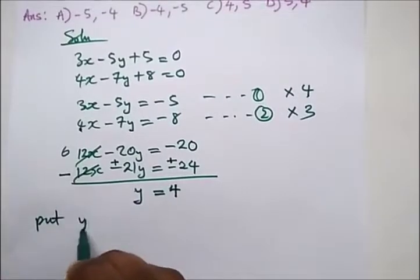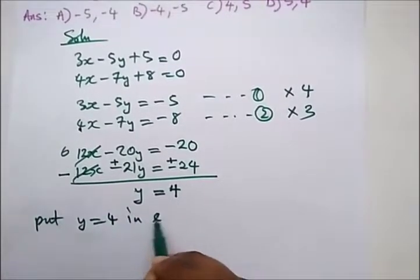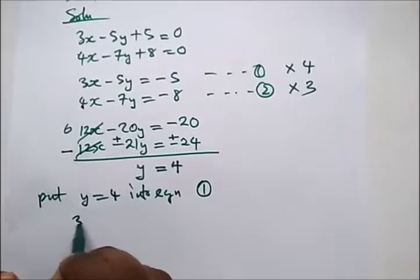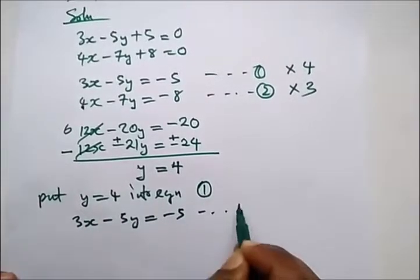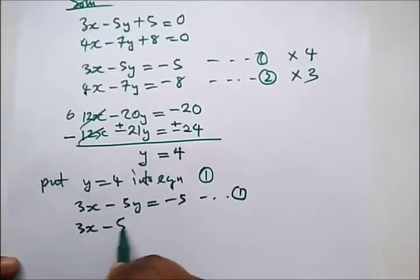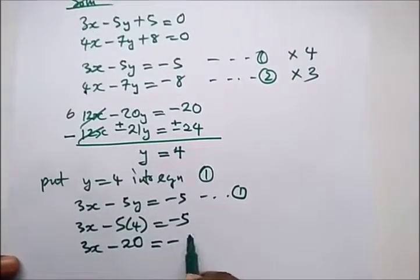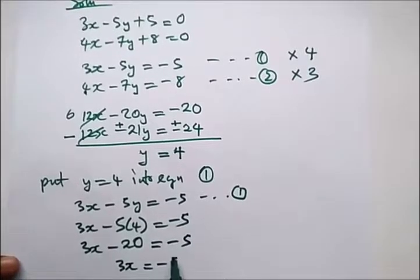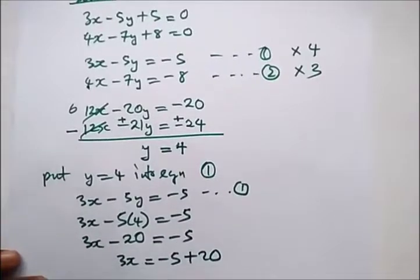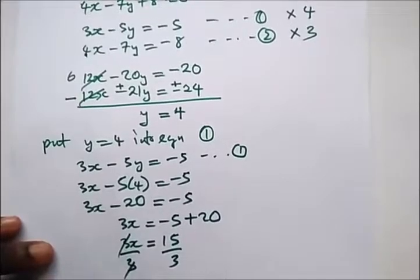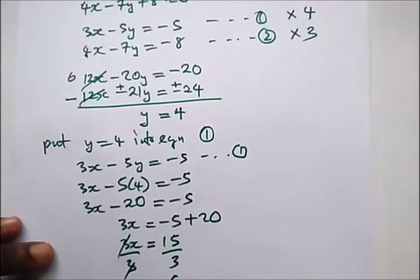We substitute y equals 4 into equation 1. You can choose any equation; I prefer equation 1: 3x minus 5y equals minus 5. Putting in the value: 3x minus 5 times 4 equals minus 5, so 3x minus 20 equals minus 5. Taking 20 to the other side: 3x equals 15. Dividing both sides by 3, x equals 5.